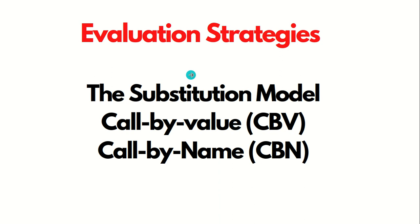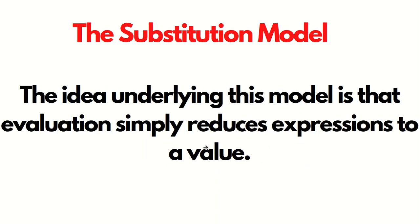Now, how are things evaluated? We have the concept of the substitution model, which is divided into two parts: call by value and call by name. The idea underlying this model is that evaluation simply reduces expressions to a value. Let's see one example.